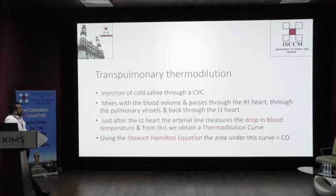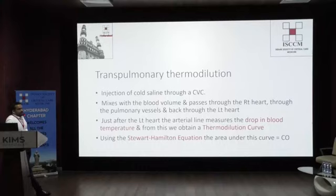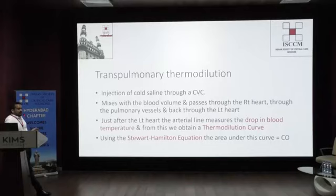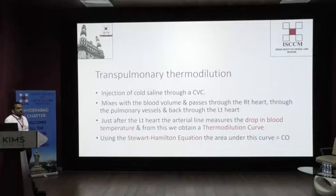For transpulmonary thermodilution, you inject cold saline through the central venous catheter. The temperature and volume of the cold saline must first be entered into the monitor. The cold saline mixes with blood volume, passes to the right side of the heart, and after passing to the left side, the arterial end measures the drop in temperature. From that temperature drop, the monitor extrapolates a curve — the thermodilution curve — and by applying the Stewart Hamilton equation, calculates cardiac output.